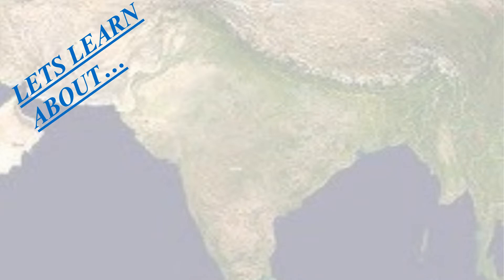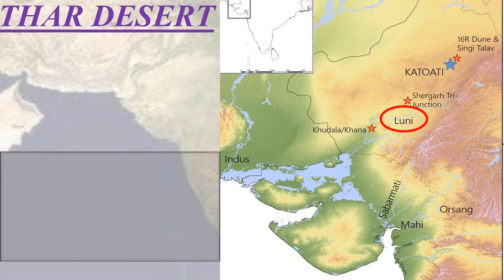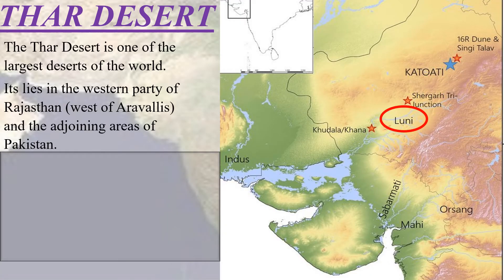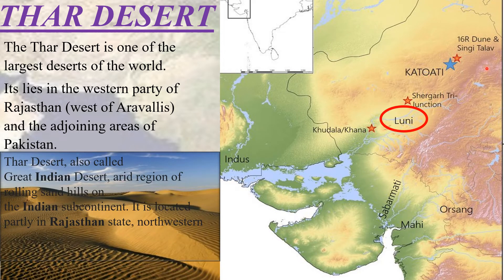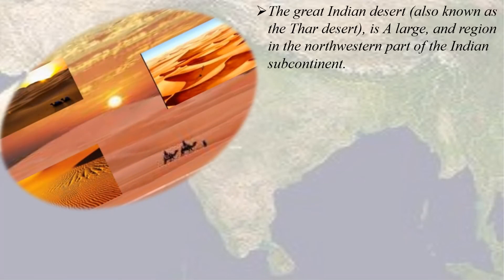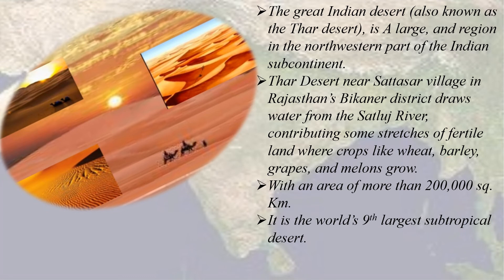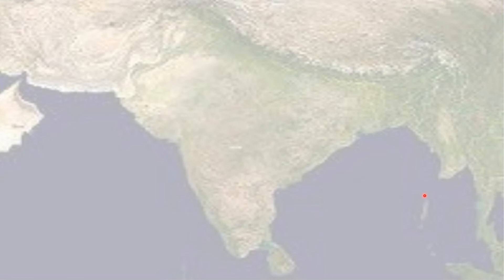The Thar, also called the Great Indian Desert, is an arid region in the northwestern part of India. It extends from Gujarat and Rajasthan in the northwest to Punjab and Haryana in the north. The region receives scanty rainfall as it lies on the leeward side of the Aravalli Mountains. As a result of extreme dryness and high temperatures, the region lacks water despite the presence of the Luni River. The landscape is characterized by high and low sand dunes. The Indira Gandhi Canal, which flows near Suratgarh village in Rajasthan's Bikaner district, draws water from the Sutlej river, contributing fertile stretches where crops like wheat, barley, grapes, and melons grow.